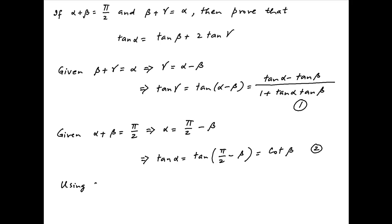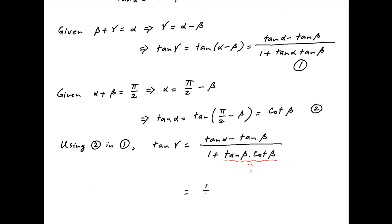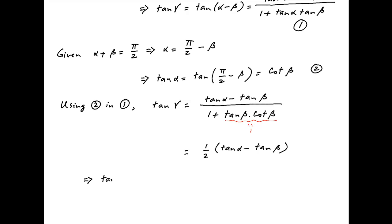Substituting the value of tan α from Result 2 into the denominator on the right-hand side of Result 1, we get tan γ = (tan α - tan β) divided by (1 + tan β·cot β). In the denominator, tan β·cot β equals 1, so tan γ simplifies to half of (tan α - tan β).